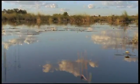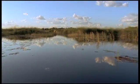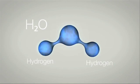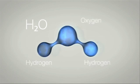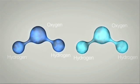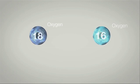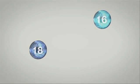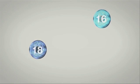Isotopes are water's fingerprints and can be used to determine the origin, age and renewal rate of water and to locate safe drinking water. Every water molecule consists of two atoms of hydrogen and one of oxygen. But not all hydrogen or oxygen atoms are the same — some are lighter and some are heavier. These different atoms are called isotopes.